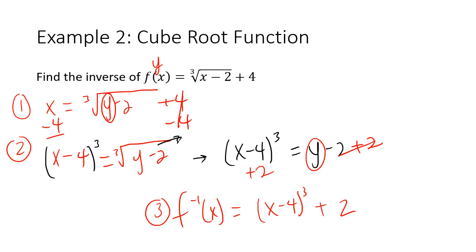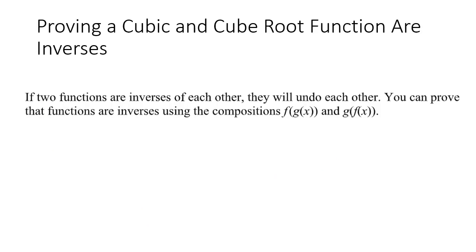Now let's talk about proving that a cubic and cube root function are inverses. To prove it, we remember that if two functions are inverses of each other they will undo each other. We prove this using composition of functions — substituting g(x) into f, and f(x) into g. We'll look at a fully worked example to understand the steps.